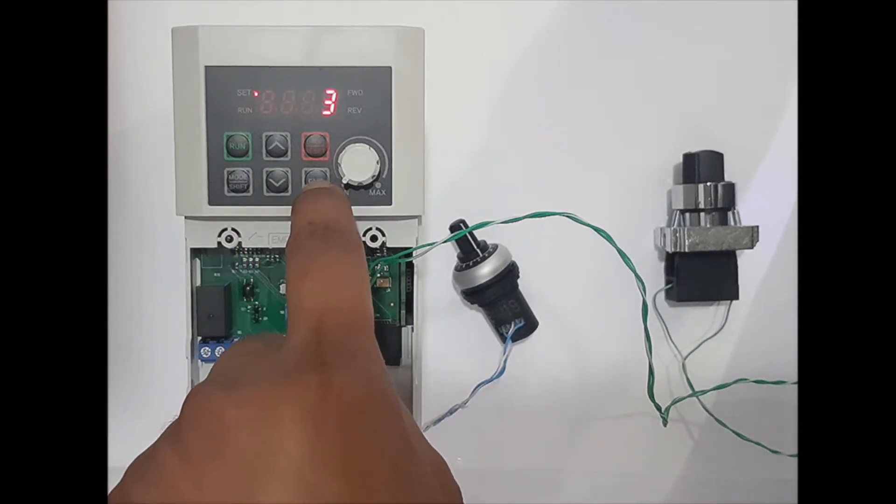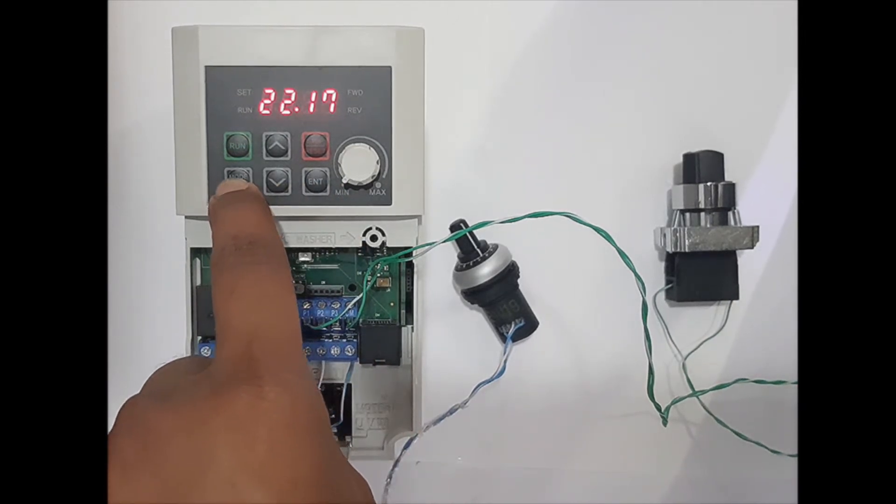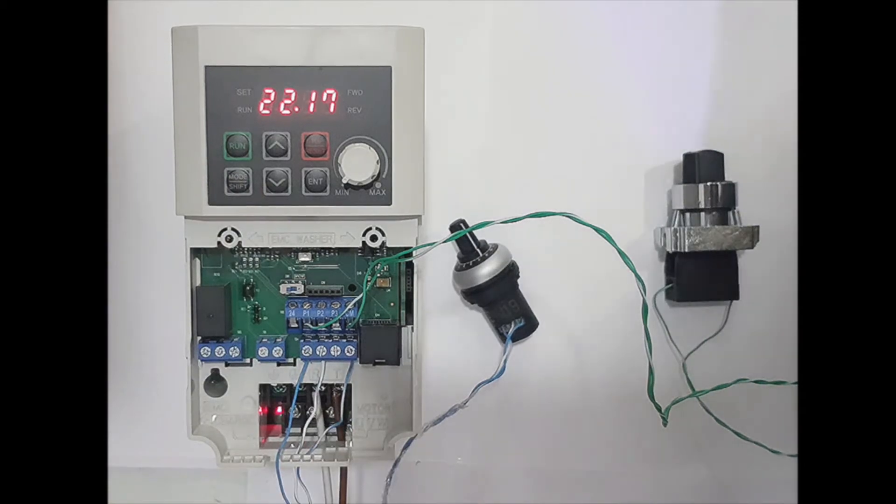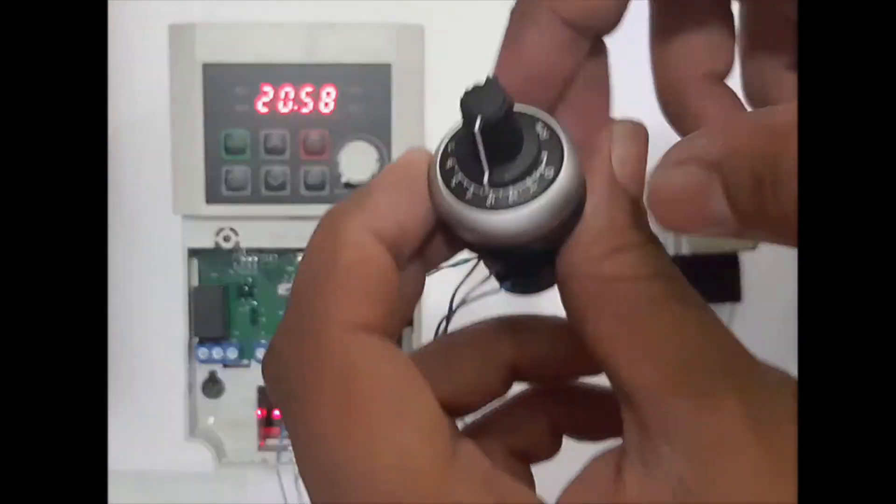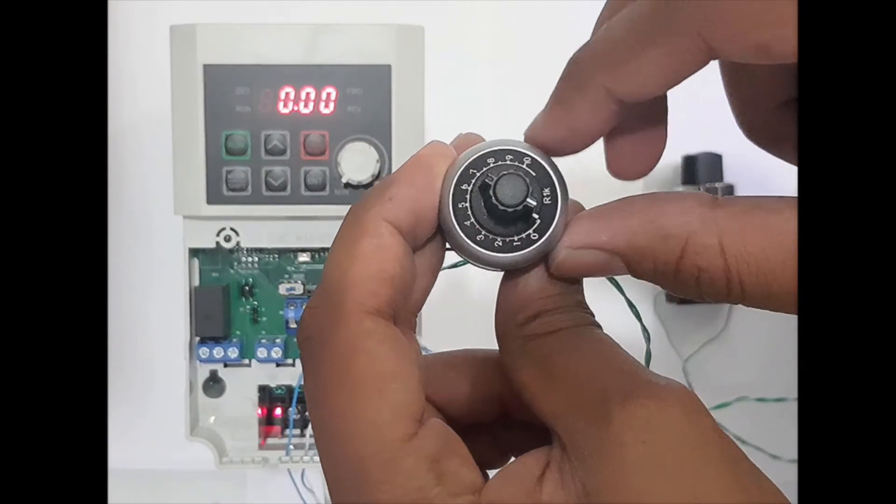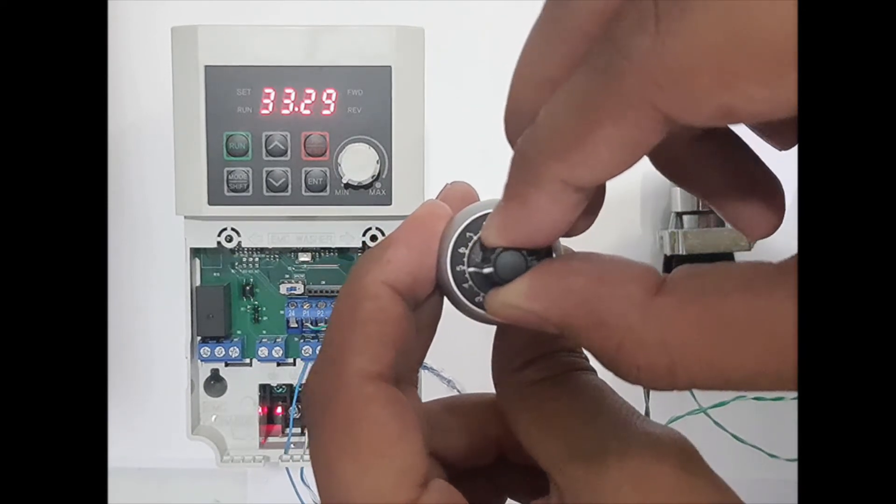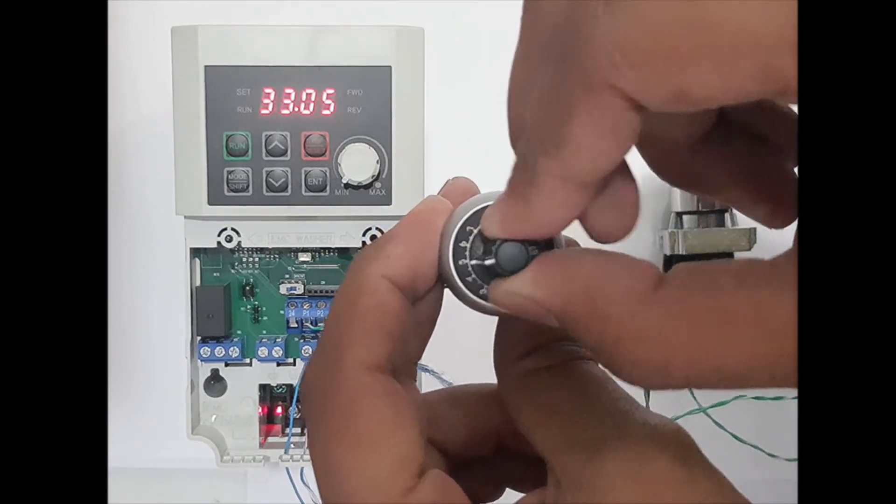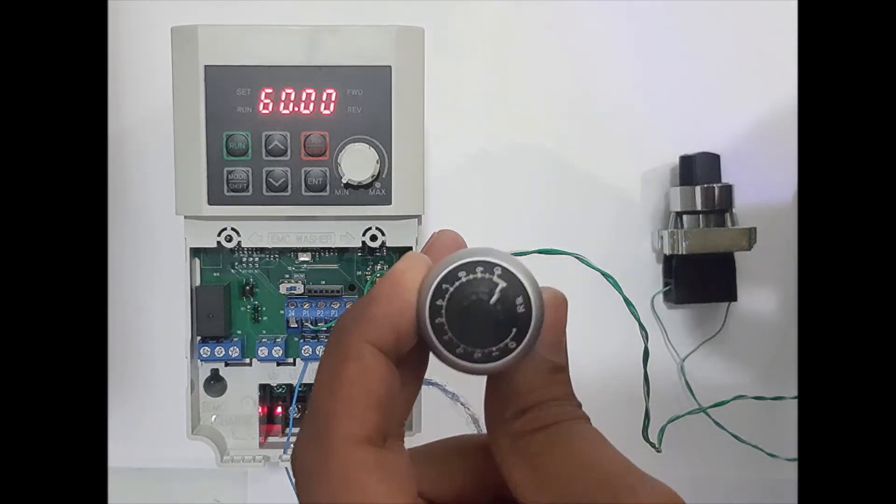Then press shift to come to the main screen. Now the speed is controlled by the potentiometer. If I make it zero, I will see zero. If I make it fifty percent, I'll see fifty percent. And if I make it one hundred percent, you will see sixty Hertz.